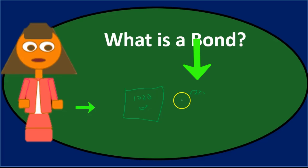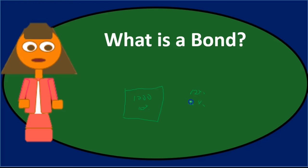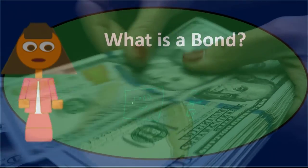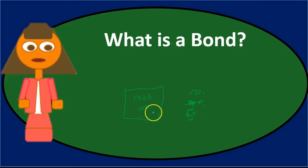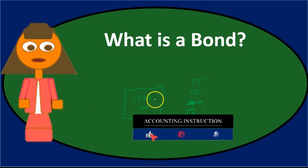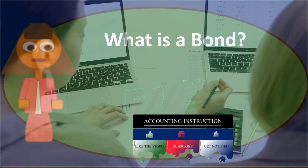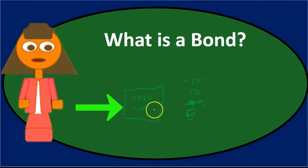If the market rate is higher than the stated rate — say 12% versus our 10% — investors can go elsewhere for a better return, so we must sell our bond at a discount. If the market rate is less than the stated rate — say 5% — investors will want our bond, and we can sell it at a premium. If the market rate equals the stated rate, we sell at par. Any difference between the date the bond was made and the date it was sold makes it less likely the market rate will equal the stated rate, resulting in a discount or premium.